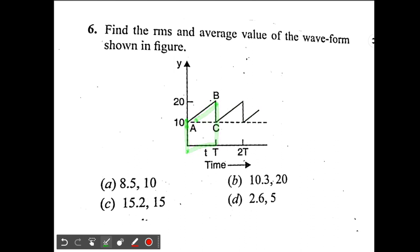If we find the average and RMS for one time period, we can find it for the entire waveform. Now if you look at the options, all the options are different. Let me tell you one thing - since this is a straight line graph, finding average is very easy.